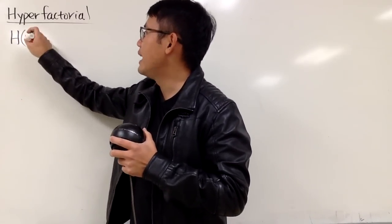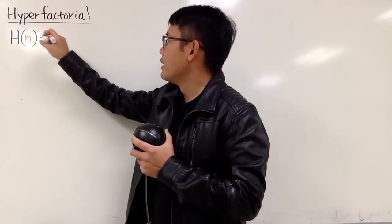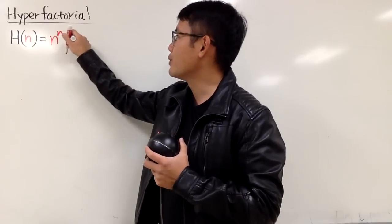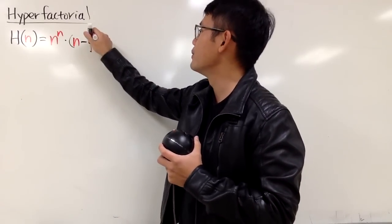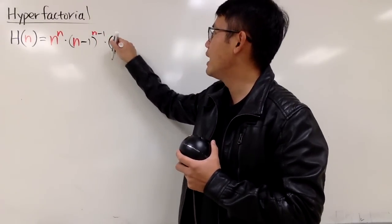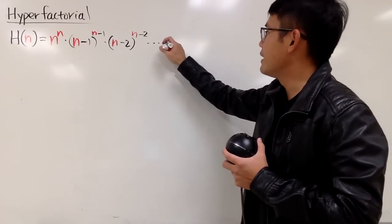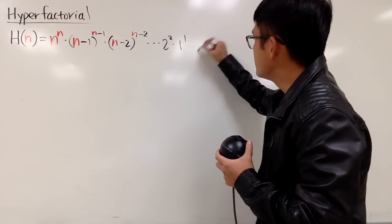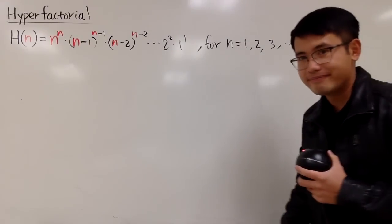We write h of n like this, and to use this definition, you have to make sure n is a positive whole number. This is defined to be n raised to the nth power, and then you go down by 1 — n minus 1 raised to the n minus 1 power. The pattern keeps on going: n minus 2 raised to the n minus 2 power, and so on, all the way down to 2 to the second power, and then 1 to the first power. This is the hyperfactorial, and it's only defined for positive whole numbers.